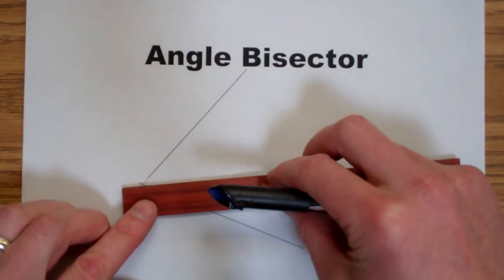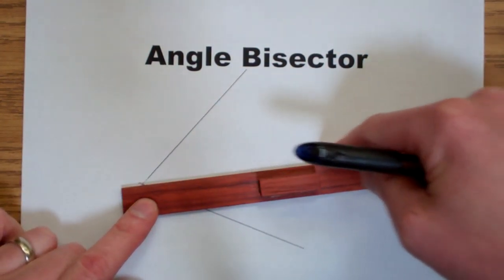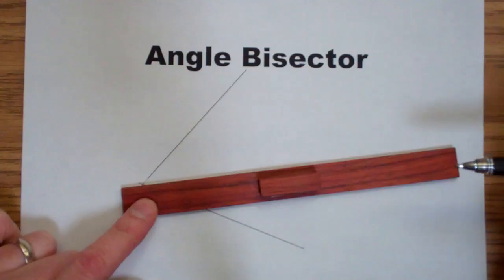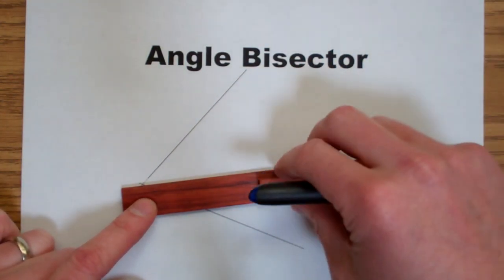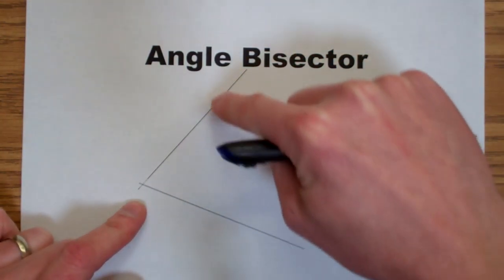The angle bisector is going to go somewhere through the middle here. All the points on the angle bisector are equidistant from each side of the angle.